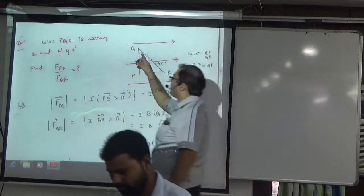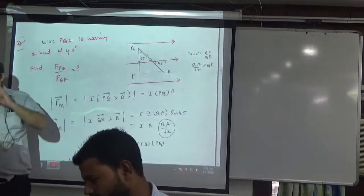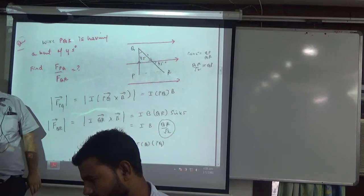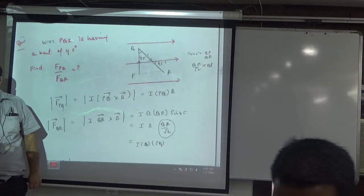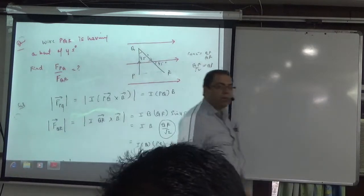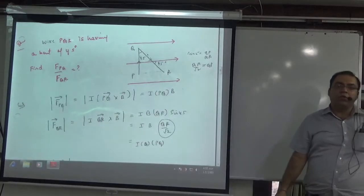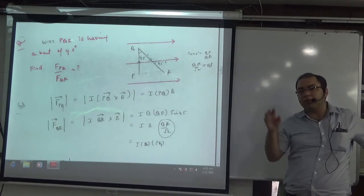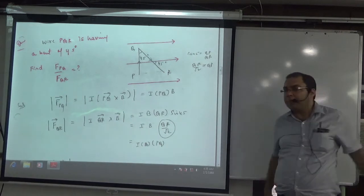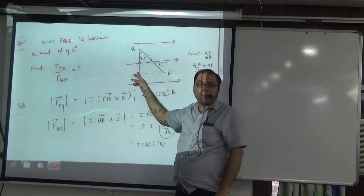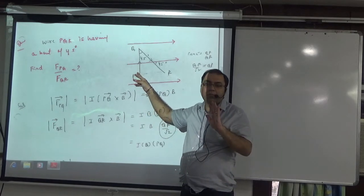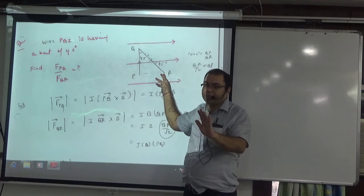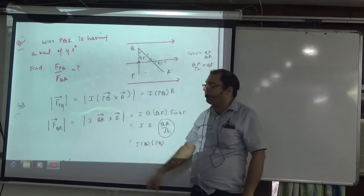Let us suppose you have a current carrying wire and a magnetic field is present. Because the current carrying straight wire is lying in the magnetic field, it will experience a force. You have to tell the ratio of PQ length and QR length.